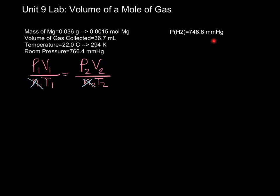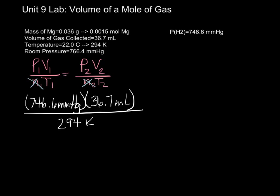Pressure 1, we're going to get from here, it is the pressure of the hydrogen gas. So, I'm going to write that down, 746.6 millimeters of mercury. And the volume of that gas that we collected was 36.7 milliliters. The temperature is the temperature of the gas, which is 294. Remember, we're working with gases, so we must be in Kelvin. And then we're trying to go to standard conditions. Standard condition for pressure is 760.